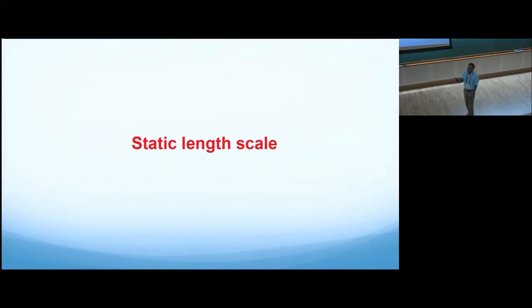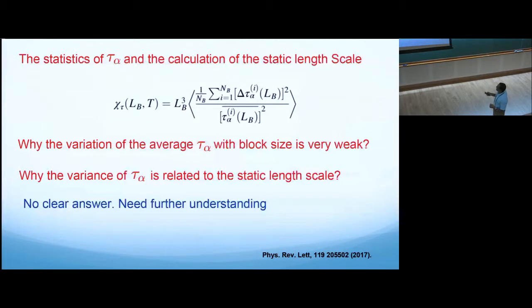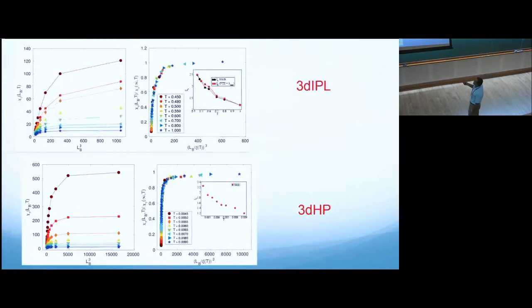As I told you before, to calculate static length scale you need to do many other things like something called point-to-set, then there is other scaling analysis. But what was a bonus for this analysis was that using the same analysis you can also get static length scale. For that, what we defined is we looked at how relaxation fluctuates in different sub-blocks and you look at the corresponding susceptibility of that time scale fluctuation. If you do the scaling analysis of that in the same exactly same way, it picks up the static length scale.